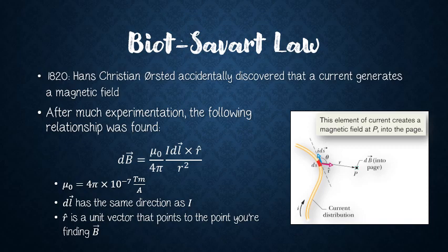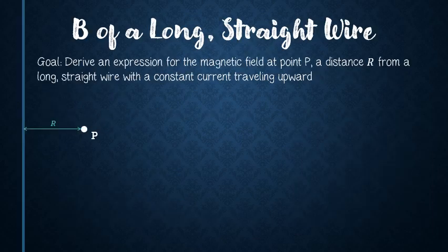Now that we know the basics of this law, we're going to look at two examples of applying it: deriving an expression for the magnetic field due to a long straight wire, and then due to a circular arc of wire. Our goal is to derive an expression for the magnetic field at a point P, located a distance capital R from a long straight wire carrying a constant current I. We'll assume the current is traveling upward.